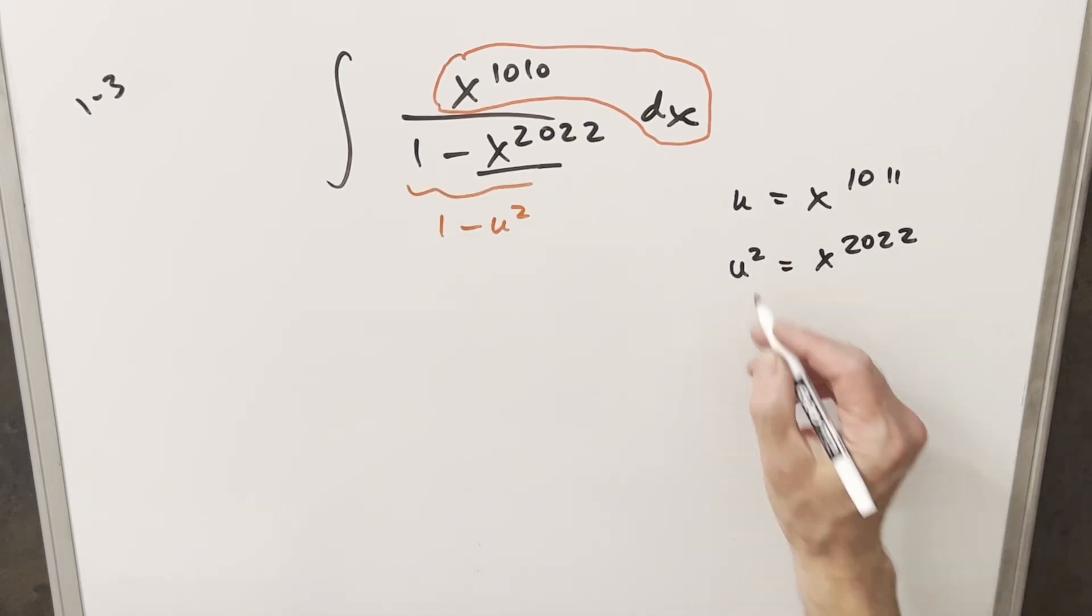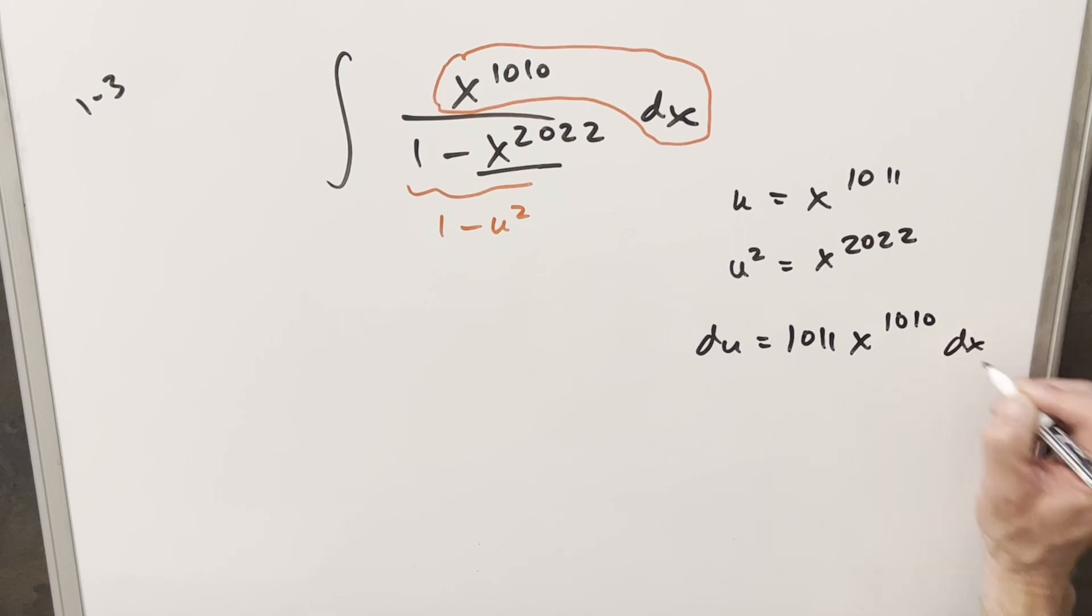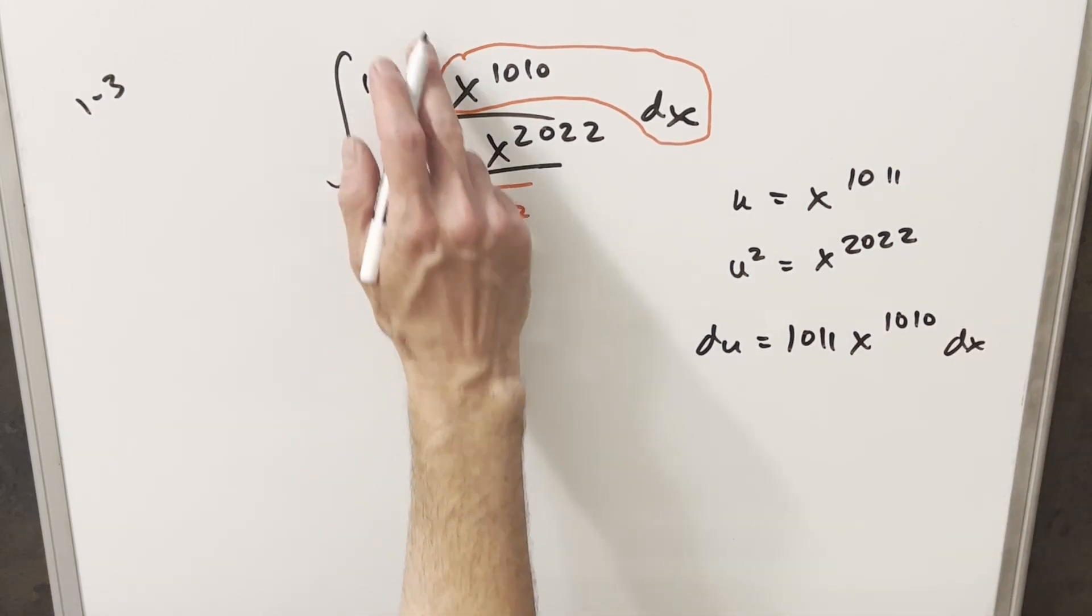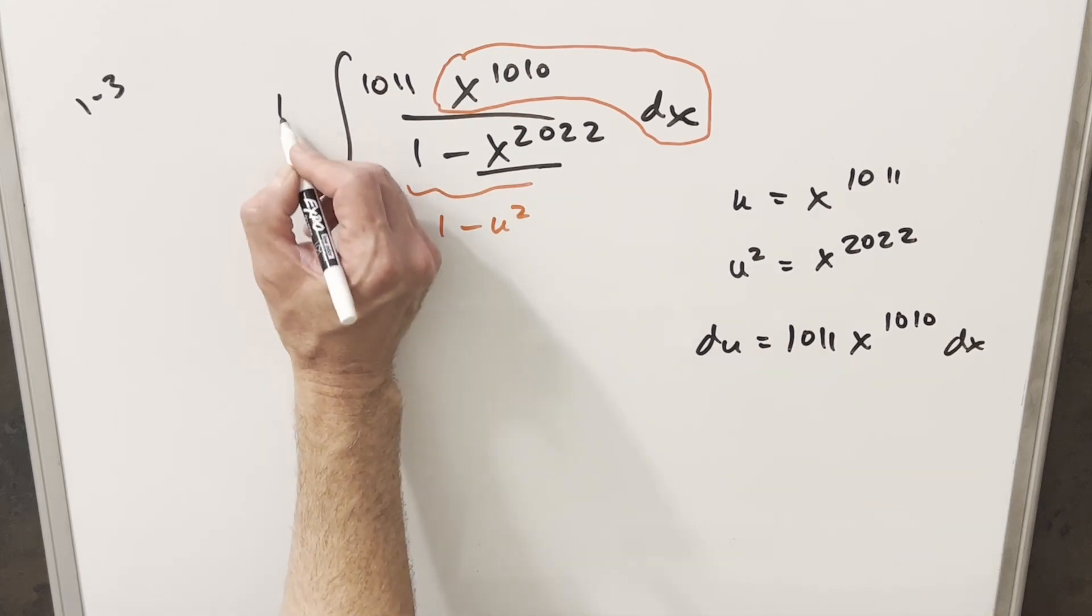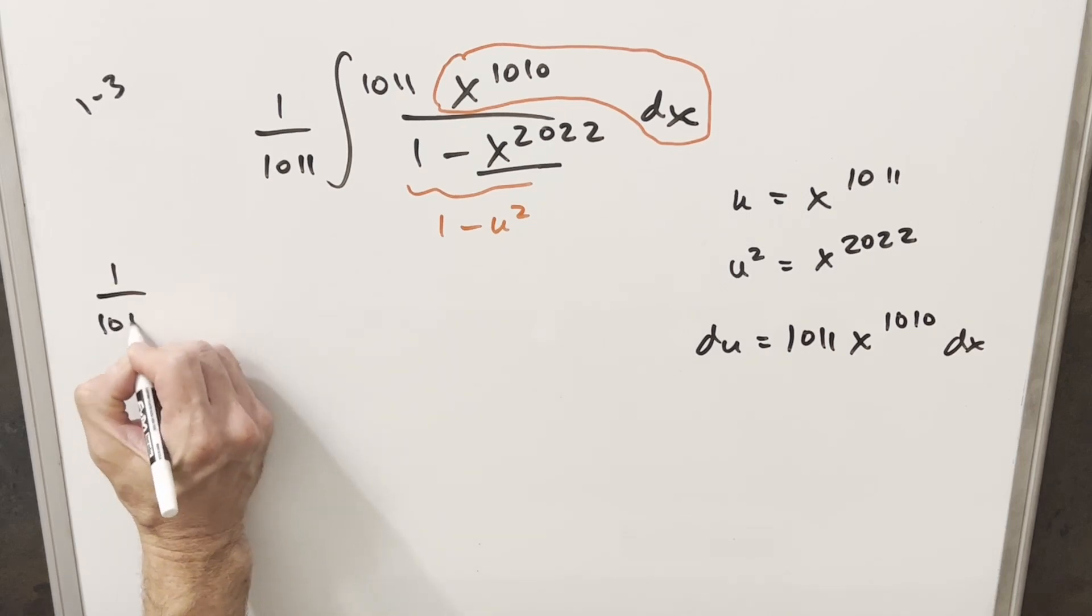Now, let's look at what our du value is. So I take my derivative here, just using power rule we're going to have 1011x to the 1010 dx. And if I just multiply the numerator by 1011, then we have exactly our du value. So what I'll do is just divide by 1011, so I'm not changing this. Then we can go ahead and make this substitution.